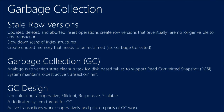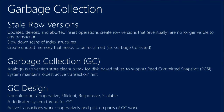One thing I particularly want to highlight is that garbage collection is cooperative. First, we have a dedicated system thread for garbage collection that once in a while looks at the system, sees if there are rows to be collected, and if so frees up the unused memory. In addition, active transactions help the garbage collector — as they are scanning the indexes, they also check for stale rows and remove them from the index they are scanning.